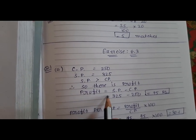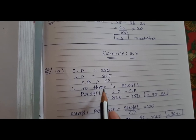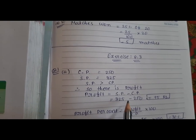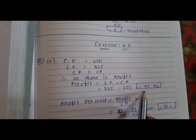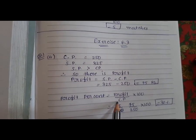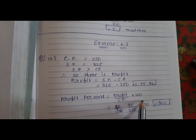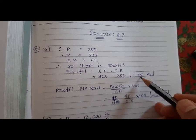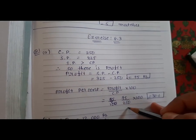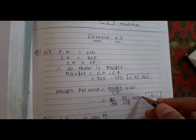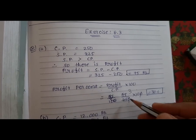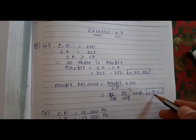Profit is equal to selling price minus cost price: $325 minus $250, so profit is $75. Profit percent equals profit upon cost price multiplied by 100: 75 upon 250 multiply 100. After cancellation, profit percent is 30%.